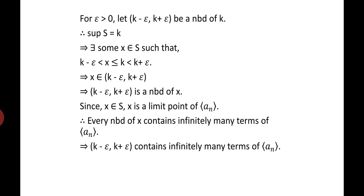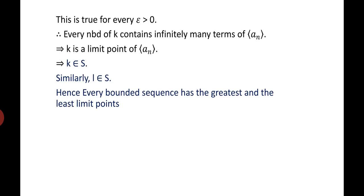This implies (K - epsilon, K + epsilon) is a neighborhood of X, and since X is an element of S, X is a limit point of A_N. Therefore, every neighborhood of X contains infinitely many terms of A_N, which implies (K - epsilon, K + epsilon) contains infinitely many terms of A_N. Since this holds for every epsilon > 0, every neighborhood of K contains infinitely many terms of A_N, implying K is a limit point of A_N, i.e., K belongs to S. Similarly, we can prove L belongs to S.